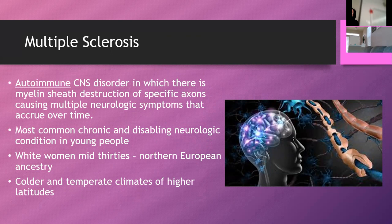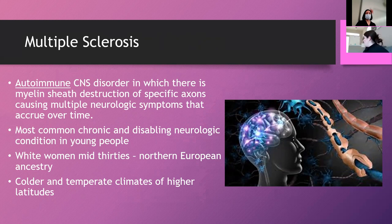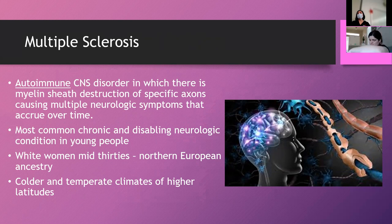Multiple sclerosis is an autoimmune disease of the central nervous system where the myelin sheath over neurons becomes frayed — there's destruction of the myelin sheath of specific axons causing multiple neurologic symptoms over time. It's the most common chronic and debilitating neurologic condition of younger people, typically white women in their mid-thirties, of Northern European ancestry, living in colder, temperate climates at higher latitudes.